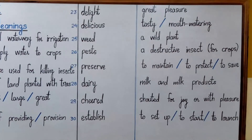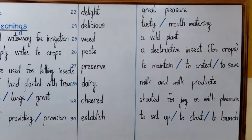Number twenty-seven is 'preserve', which means to maintain, to protect, or to save.